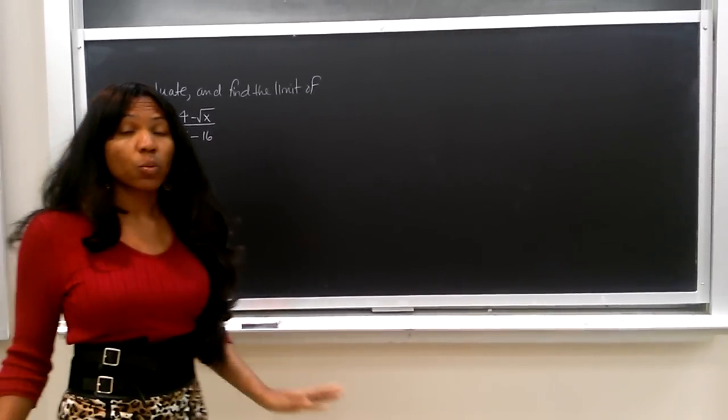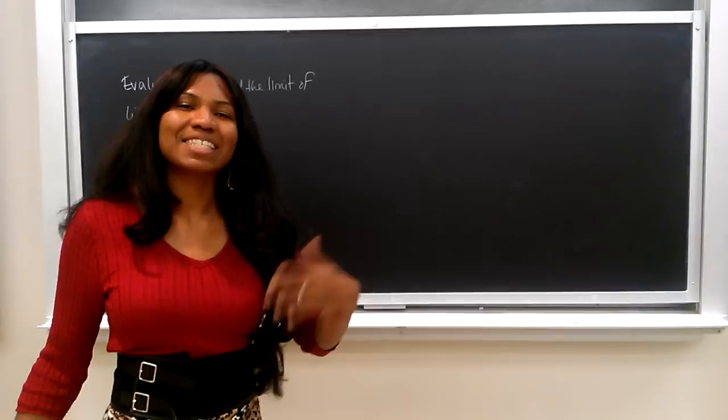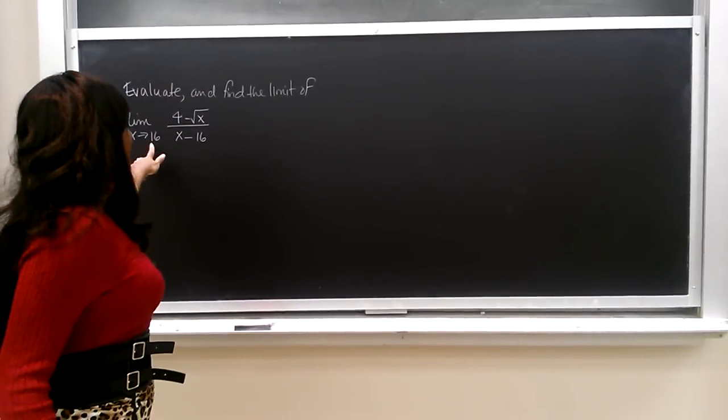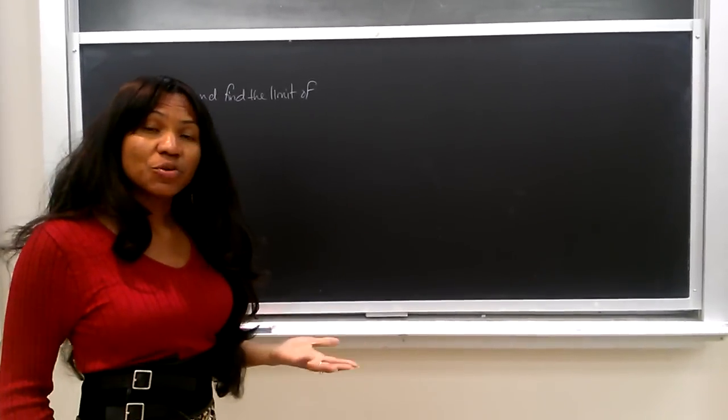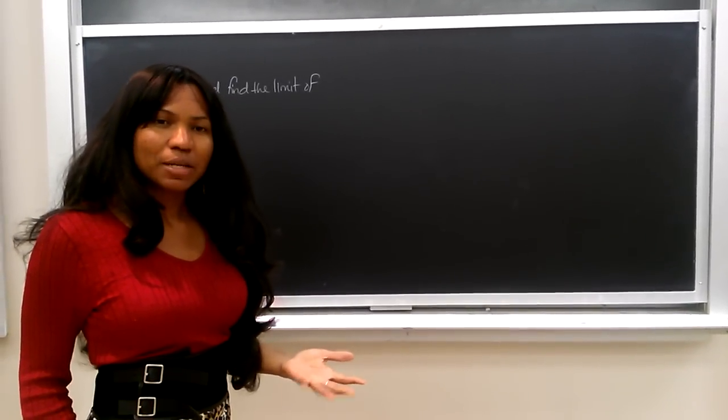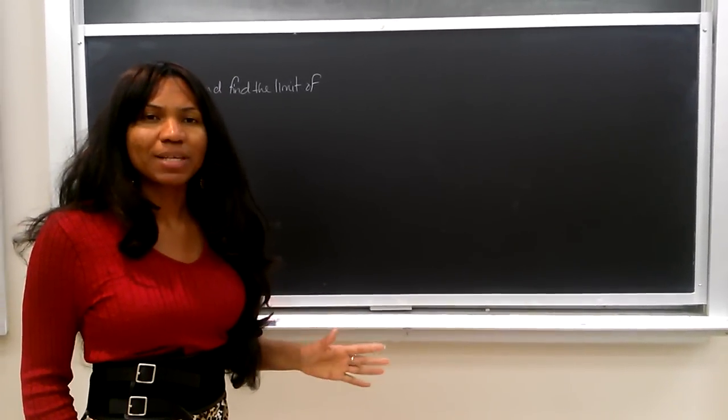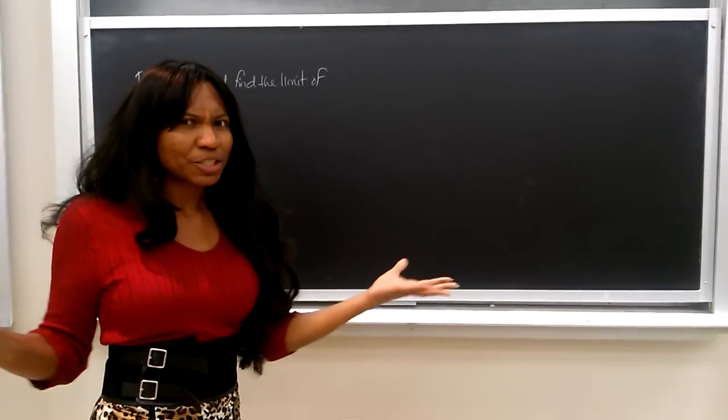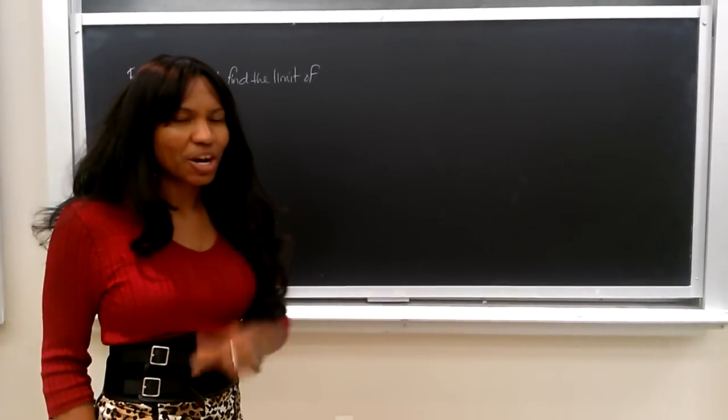Normally what we do for limits is that we substitute the x value of 16 into the limit to find out what the number is. But in this case, the denominator would be zero. So, the question is, what do we do?